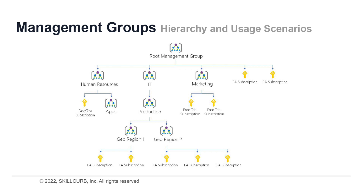The following diagram shows an example of creating a hierarchy for governance using management groups. You can create a hierarchy that applies a policy which limits VM locations to the West US region in the management group called production. This policy will inherit onto all the enterprise agreement subscriptions that are descendants of that management group and will apply to all VMs under those subscriptions. This security policy cannot be altered by the resource or subscription owner, allowing for improved governance. Another scenario where you would use management groups is to provide user access to multiple subscriptions by creating one Azure role assignment on the management group, which will inherit that access to all the subscriptions.